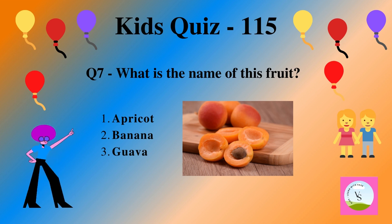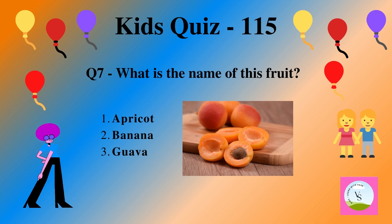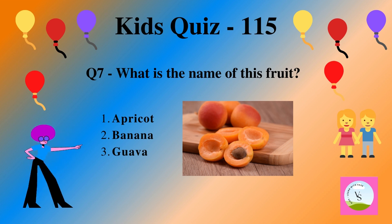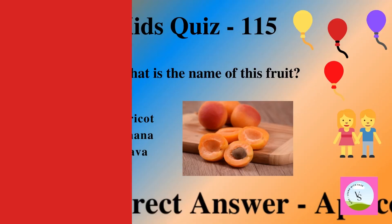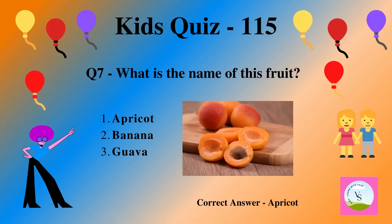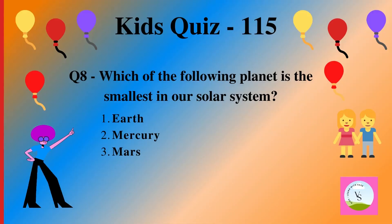Question 7. What is the name of this fruit? 1. apricot, 2. banana, 3. guava. And the correct answer is apricot.